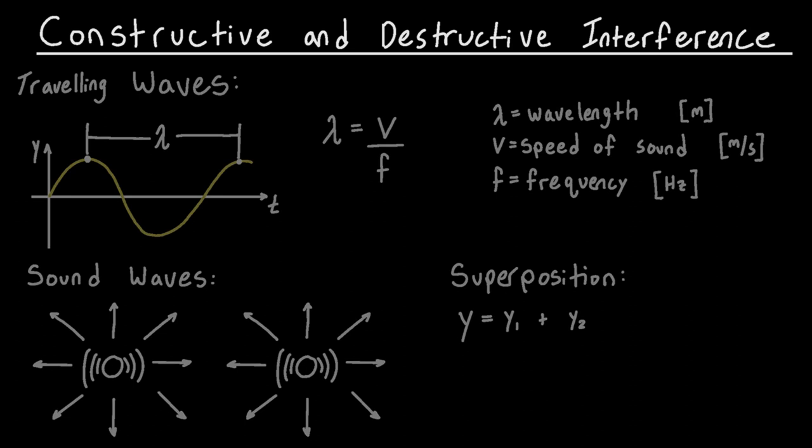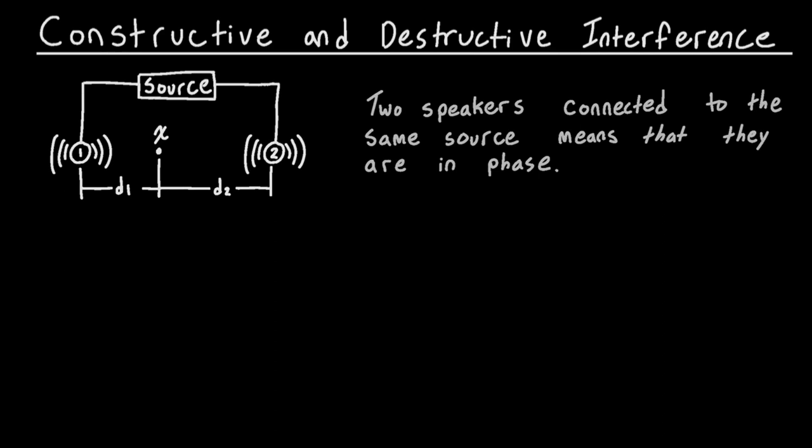Let's take a look at what happens when we take two speakers, connect them to the same source, and have them emit the same frequency that is in phase. Imagine that we are a person standing in between these two speakers and we want to know where the sound is going to be the loudest and where it's going to be the quietest. Constructive interference is where the sound waves add together — you'll hear a loud sound. Destructive interference is where the sound waves cancel each other out, so you'll hear a quiet sound.